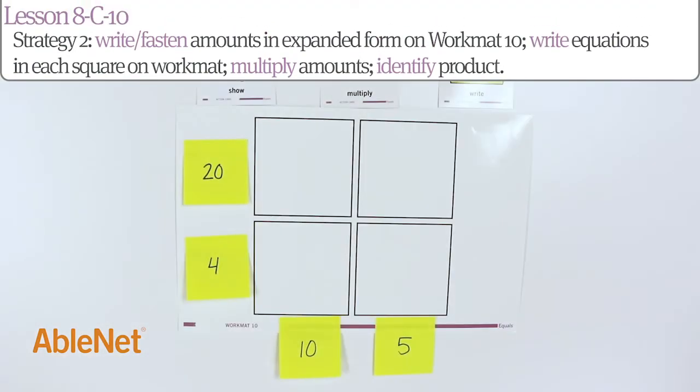For our second strategy, we're going to write or fasten the amounts in expanded form on Work Mat 10, write the equations in each square on the Work Mat, multiply the amounts, then identify the product.